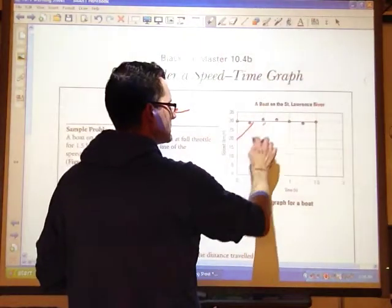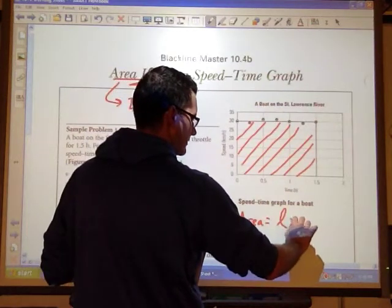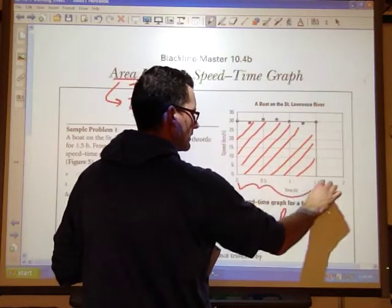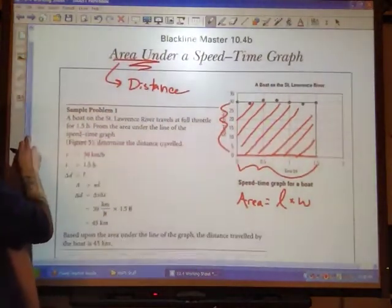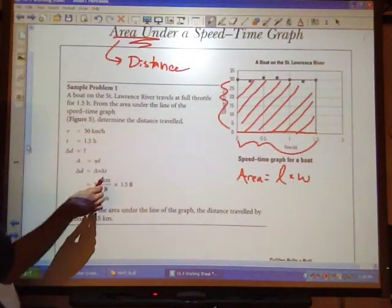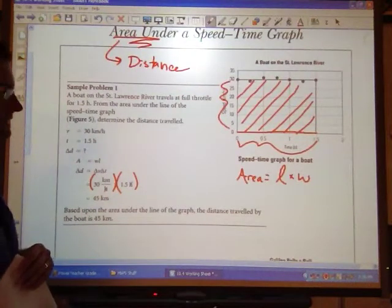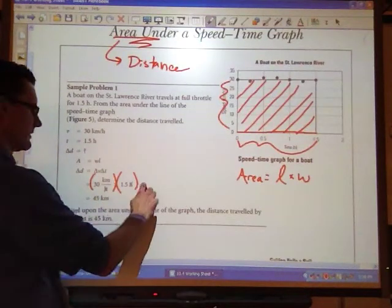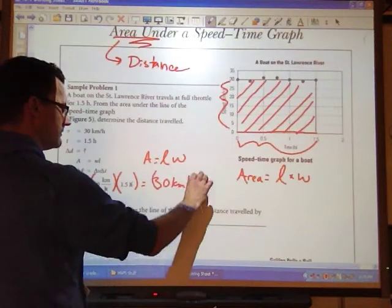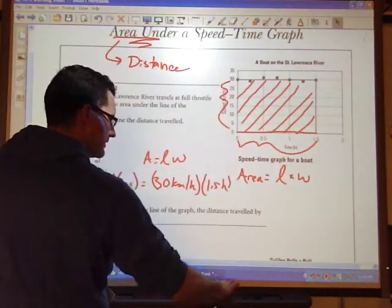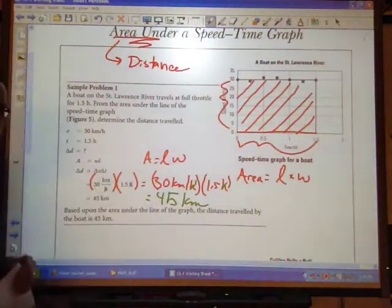A boat on the St. Lawrence River travels at full throttle for 1.5 hours. From the area, determine the distance traveled. So in this case, area gives distance. Now if we take a look here, what this really is, is a rectangle. And of course, to figure out the area of a rectangle, area is equal to length multiplied by width. We have 1.5 by 30. Area is equal to 30 kilometers per hour multiplied by 1.5 hours, gives you 45 kilometers because the hours cancel.